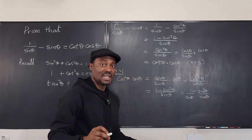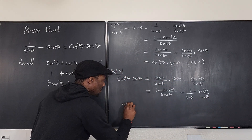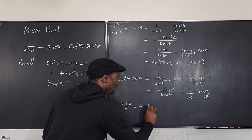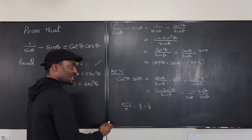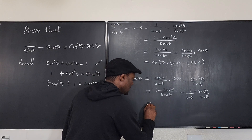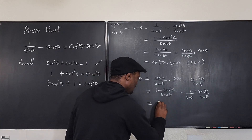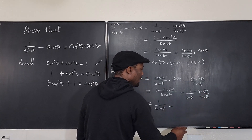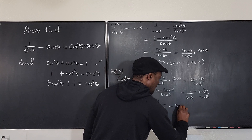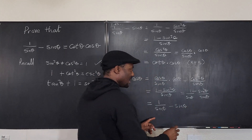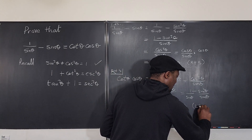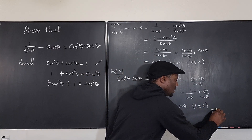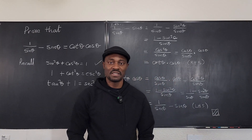Remember, in algebra (X + Y)/X can be written as X/X + Y/X — you can always split a fraction this way. So (1 − sin²θ)/sinθ becomes 1/sinθ − sinθ, because sin²θ/sinθ simplifies to sinθ. This is the left-hand side. So we have shown that the right-hand side equals the left-hand side, and we're done with the proof of the identity.